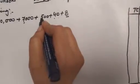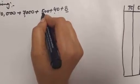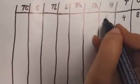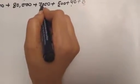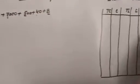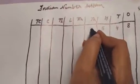Third — ones, tens, hundred — so we will write five in hundreds place. Next — ones, tens, hundred, thousand — seven thousand, so we will write seven in thousands place.